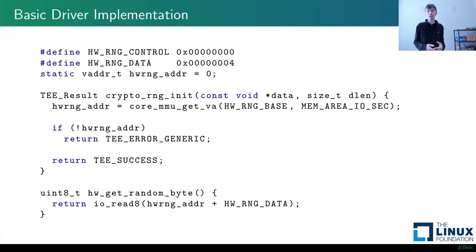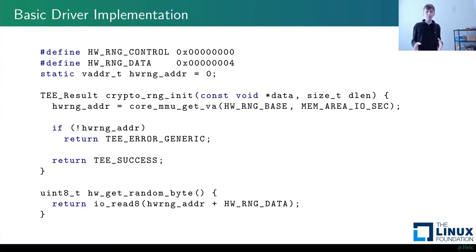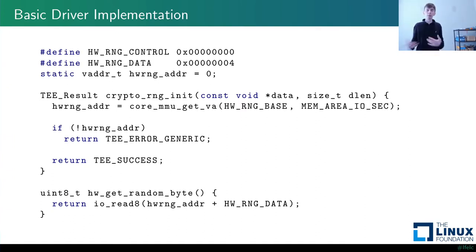We can present a very simple driver implementation immediately. All we have to do is implement RNG_init, where we obtain the virtual address for our physical hardware. Because the hardware is registered as a secure peripheral in system init, we specify we're looking for a secure peripheral mapping, and the OPTI MMU configuration looks it up and gives us the corresponding virtual address. We also implement hardware_getRandomByte, simply reading one byte of data from the peripheral at a time. If your peripheral returns four bytes at once, you may wish to reimplement the entire CryptoRNG_read function to manage hardware state more effectively.